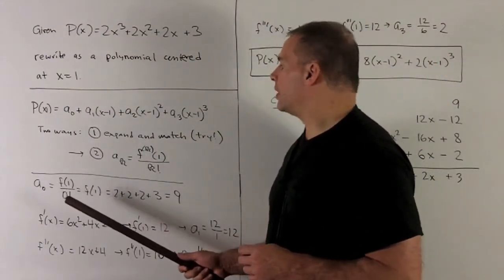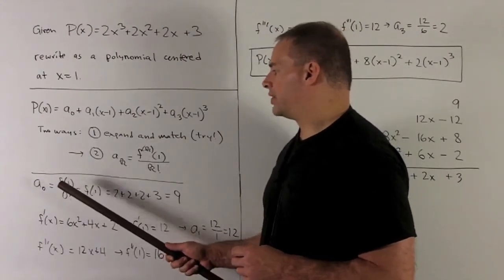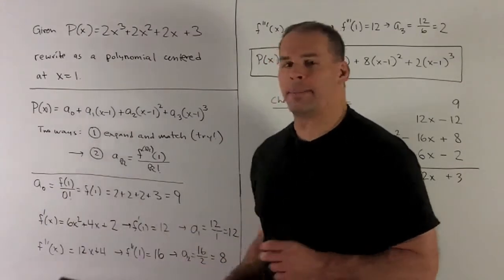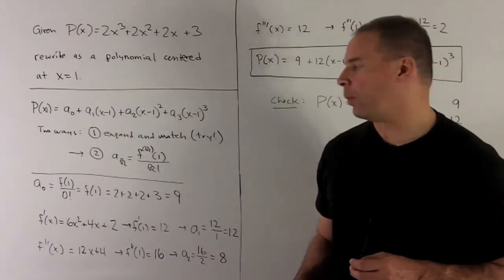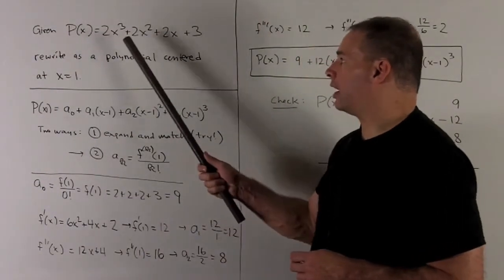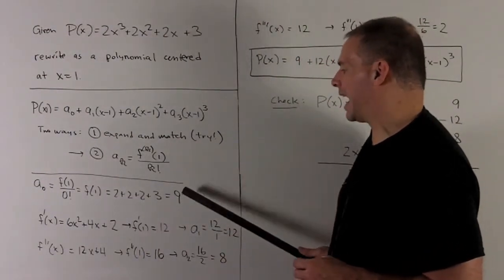Our a₀ is going to be equal to, the 0th derivative is just the function itself. So I have f(1) over 0 factorial, and by definition 0 factorial equals 1. So this is just evaluating at 1. So I put a 1 in here, and I get 2 + 2 + 2 + 3, which gives me 9.